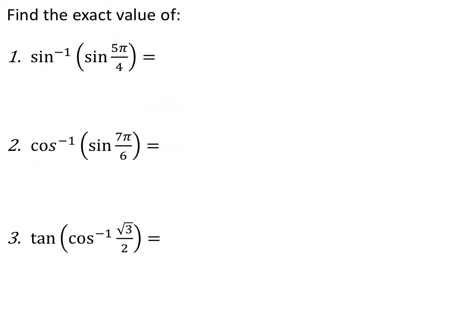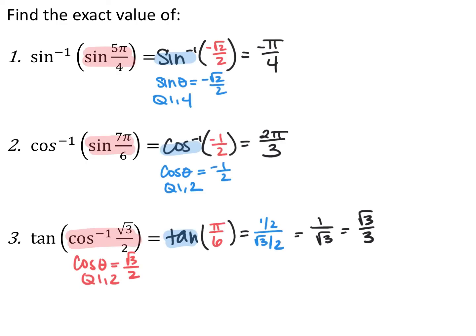Here we have some composite inverse trig functions with regular trig functions. On some of these they're not the same trig function — for example, cosine inverse of the sine — so they will never cancel. On all of these we have to work inside out. For the first one, sine inverse of the sine of five pi over four: even though they're both sine, they don't cancel because five pi over four is outside the range of sine inverse — quadrants one and four — and five pi over four is in quadrant three.